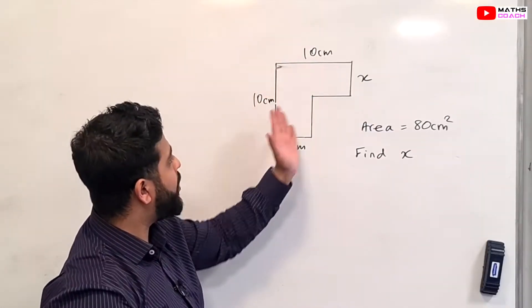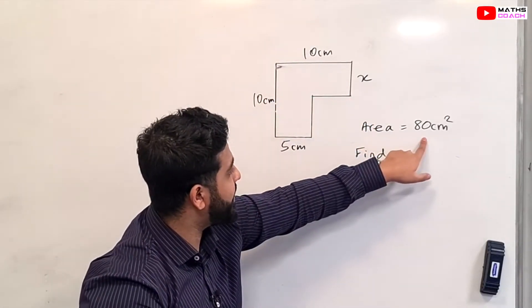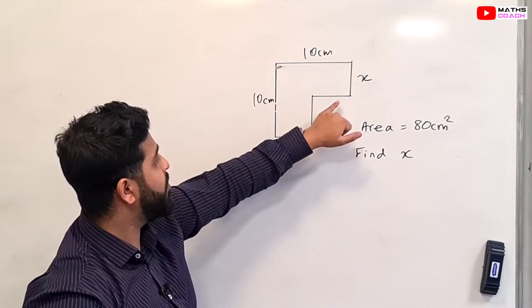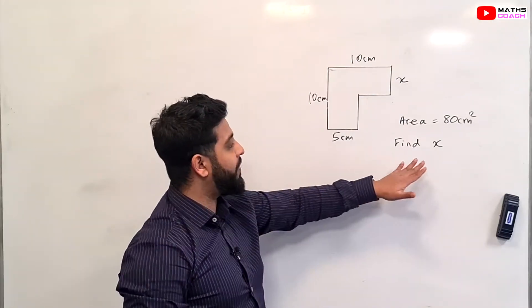So what do we have? We have a compound shape here. We're given some of the lengths and we are told that the area is 80 centimeters squared and we've been told to find this side X. We also don't know what these lengths are. So where do we begin? How do we find X?